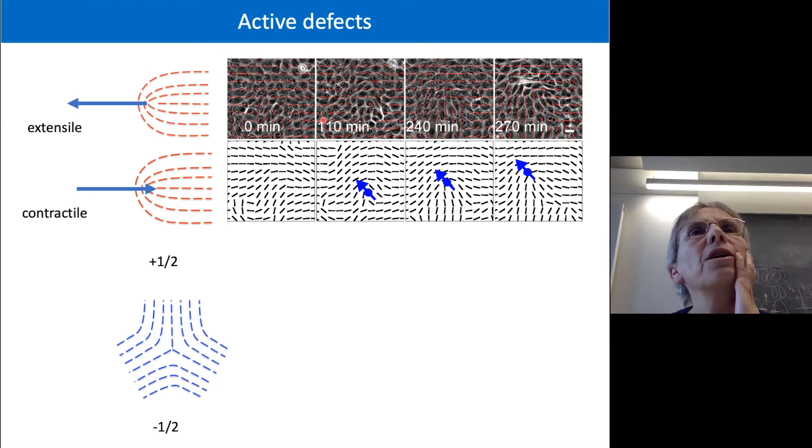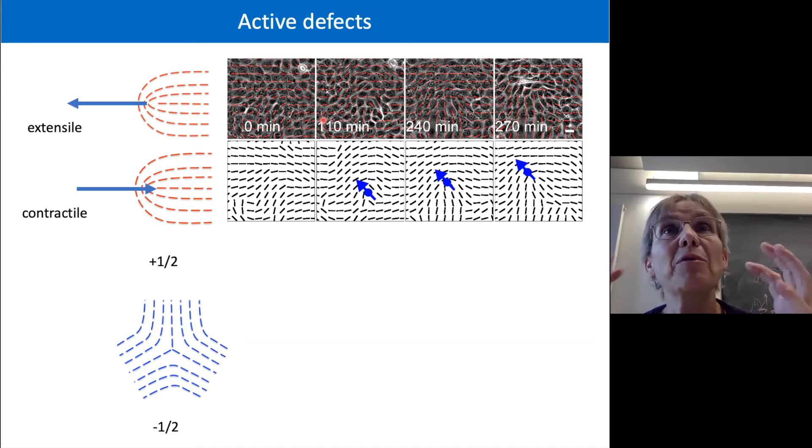So the first question is, why are we considering cells, which on average are round? I know they're not round the whole time, but they're on average round. Why can we map those onto elongated particles? And the answer is that if you look at a cell at any particular time, it's likely to be elongated in a certain direction.